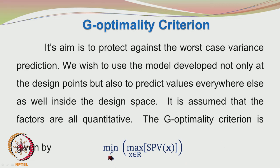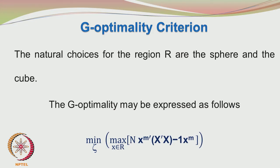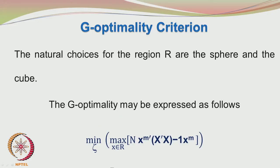The objective of the G-optimality criterion is to minimize the maximum value of the scaled prediction variance. For the G-optimality criterion, we have to identify a region, usually cubical or spherical in nature. We express the criterion as n times xm prime times (X prime X inverse) times xm, and try to find within the region of interest R the maximum value, then identify the design zeta such that the maximum value of the scaled prediction variance is minimized.